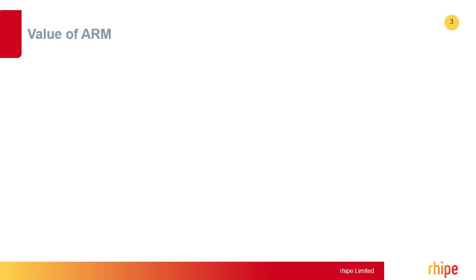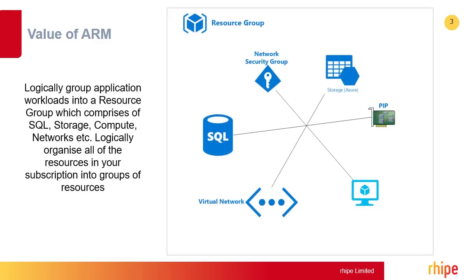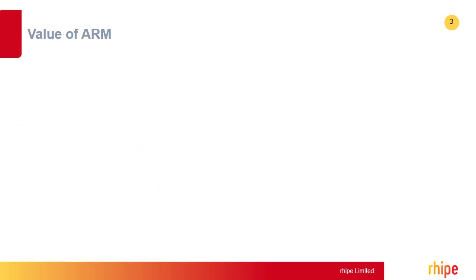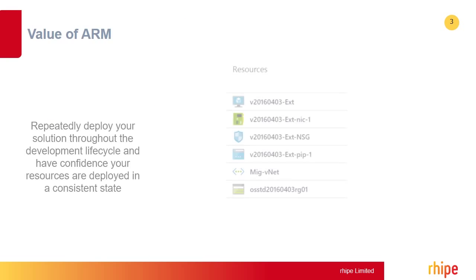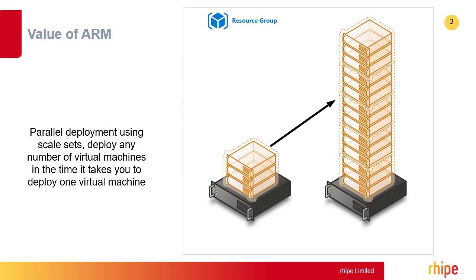What are the benefits and business value of moving VM workloads to ARM? Logically group application workloads in a resource group which comprises of SQL, storage, compute, networks, etc. Logically organize all of the resources in your subscription into groups of resources. Role-based access control — delegate access to individual resources or entire resource groups to anybody. Repeatedly deploy your solution through the development lifecycle and have confidence your resources are deployed in a consistent state. Parallel deployment using scale sets — deploy any number of virtual machines in the time it takes to deploy one virtual machine.